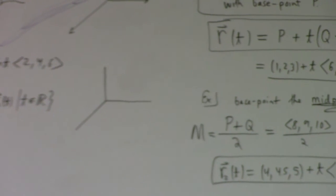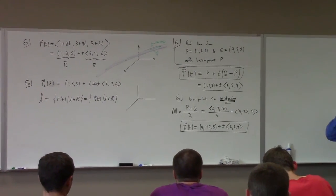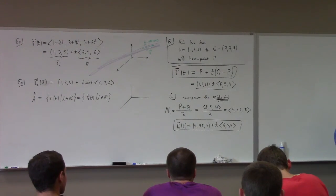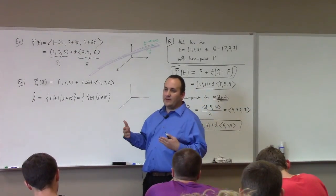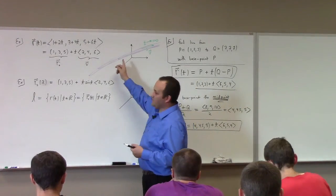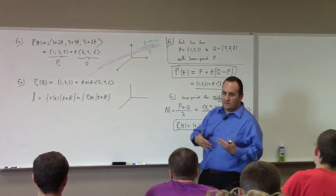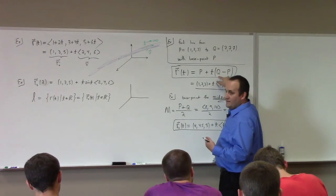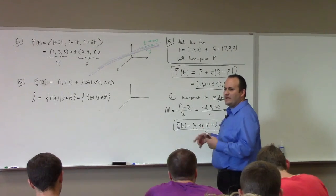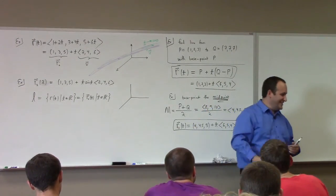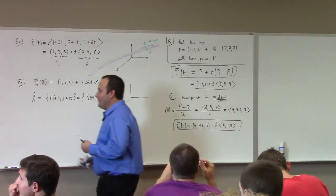An oriented line is one with a sense of direction. If there's a sense of direction, I have to insist that V is going in a certain direction as specified by the problem. Whether you need an oriented or unoriented line depends on how the problem is stated.